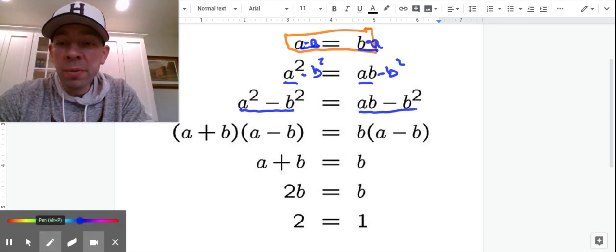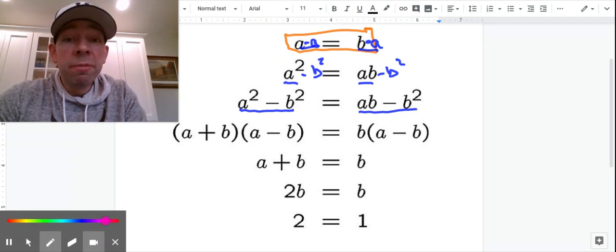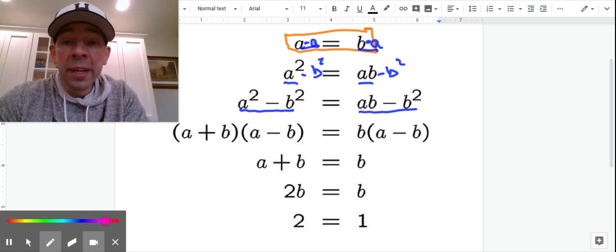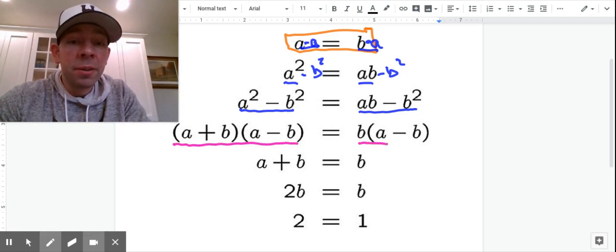And then the next move is right in our wheelhouse. We factored both sides. So on the left-hand side here, we had a difference of two perfect squares. On the right-hand side, we took out a GCF of B.